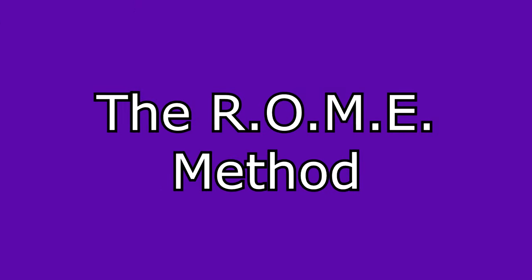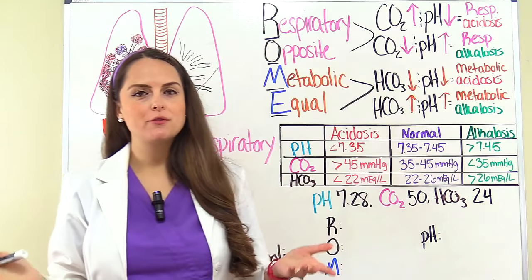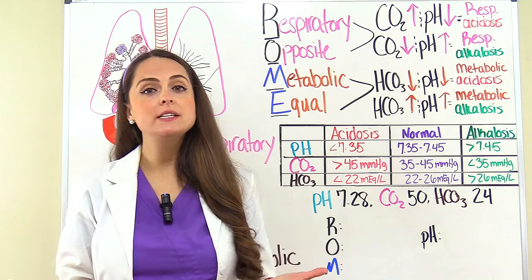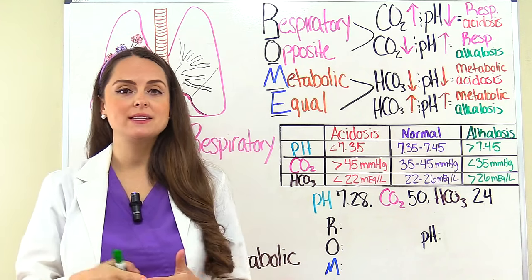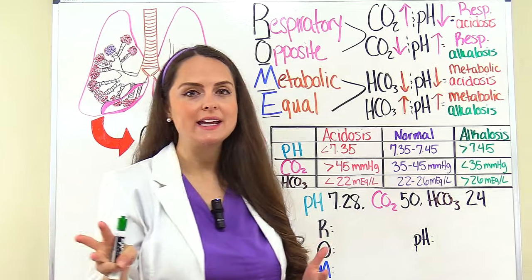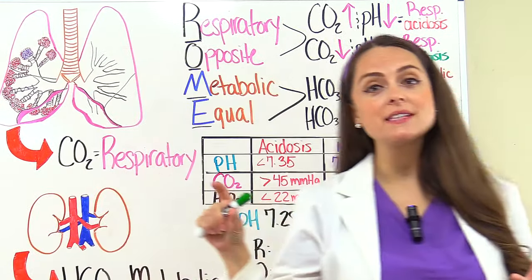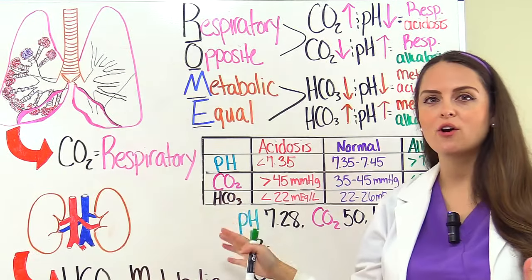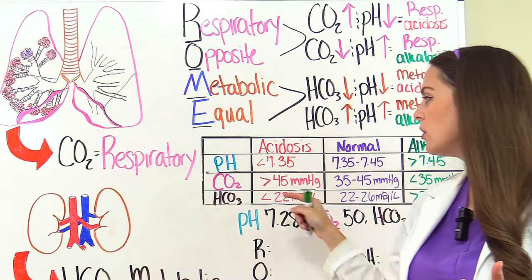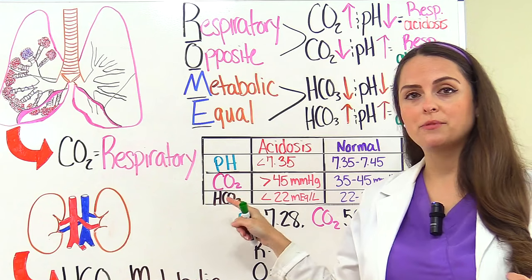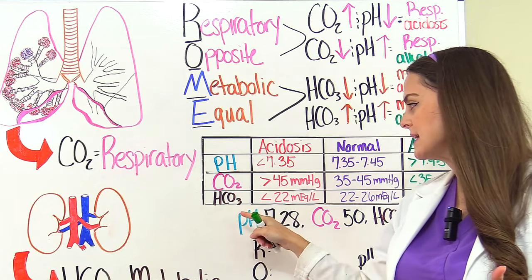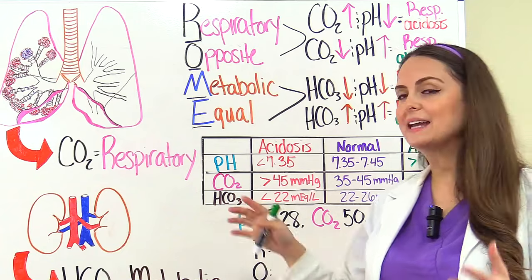First let me demonstrate the ROME method. Whenever we're solving these ABG problems, we're looking for a potential acid-base imbalance. For exams, they're going to give you three things: the blood pH level, the carbon dioxide level represented as CO2, and the bicarb level represented as HCO3.